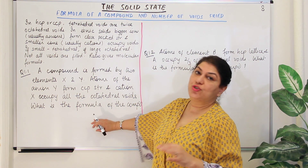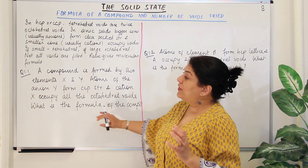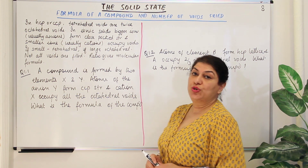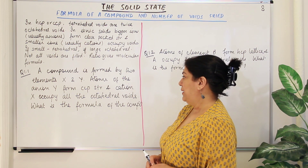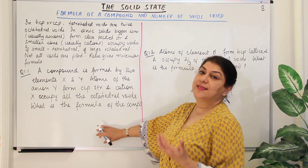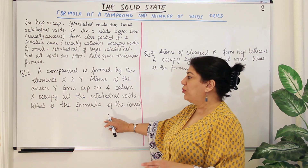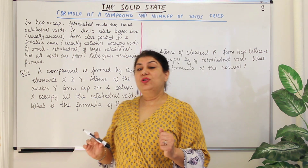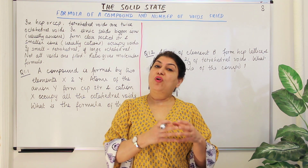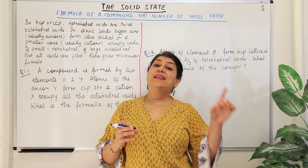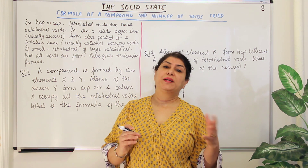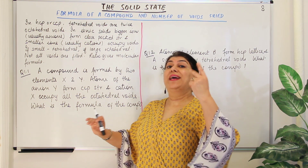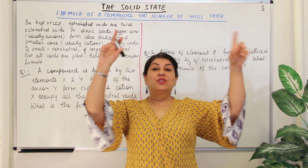Let us solve the two solved examples from the textbook. Question 1.1 reads: a compound is formed by two elements X and Y. Atoms of the anion Y form the CCP structure and cation X occupies all the octahedral voids. What is the formula of the compound? Recall that the number of octahedral voids is always equal to the number of atoms forming the CCP or HCP structure, and the tetrahedral voids are twice that number.